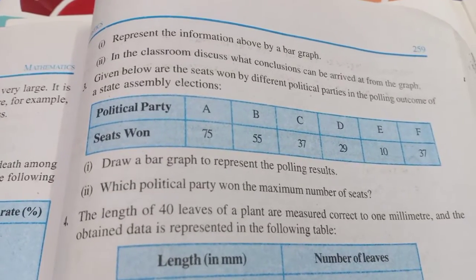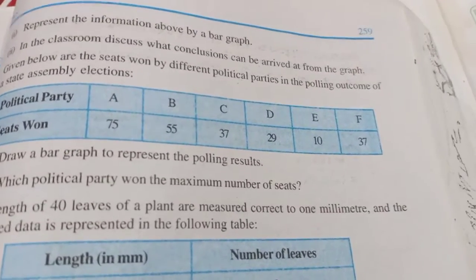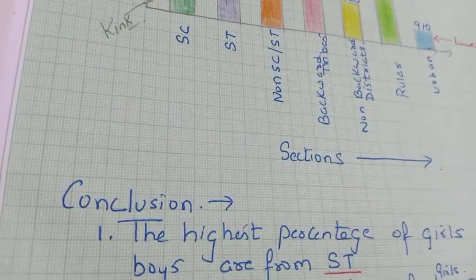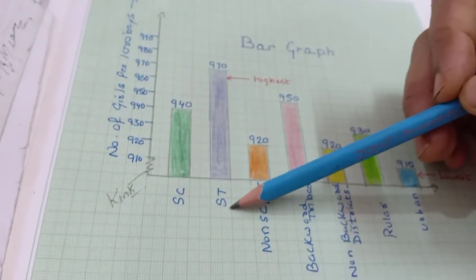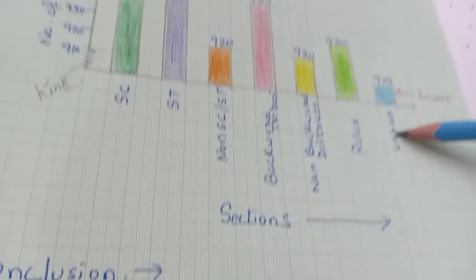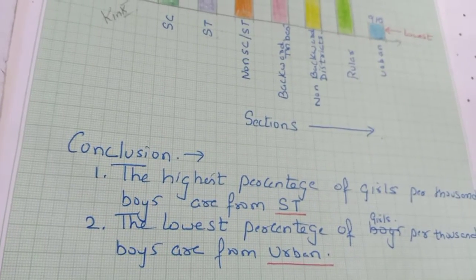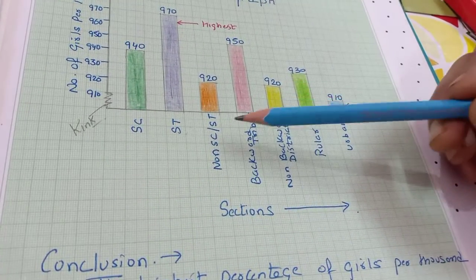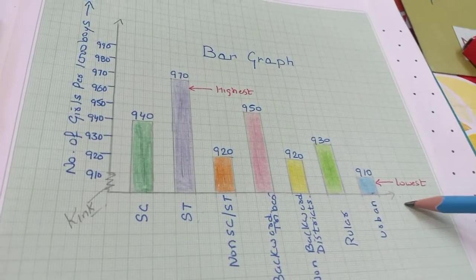Second question: in the classroom discuss what conclusion can be arrived at from the graph. Conclusion means result. The highest percentage of girls per thousand boys is 970, और किस group में आ रही है — ST यानी schedule tribe के अंदर। And lowest percentage of girls कौन से group में आ रही है — urban में। So highest percentage is in schedule tribe and lowest is in urban. आप ये भी discuss कर सकते हैं कि two same groups में दोनों values equal हैं।